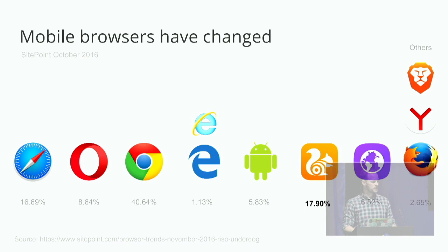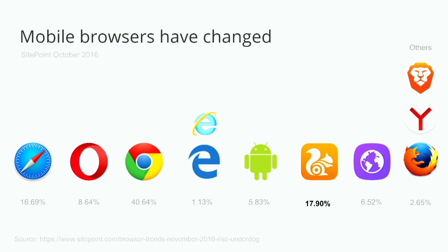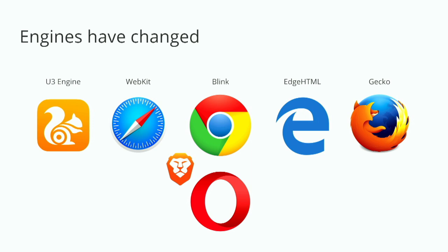Looking at overall mobile market shares, we see browsers more popular than Safari Mobile — almost 18% of the global market share. We're still seeing a significant chunk of Android stock browser. We're seeing new browsers like Samsung Internet growing triple-digit market shares every month because it's now the default browser on Samsung devices. We're basically seeing a whole shift from traditional browsers to new players entering the market — including Brave and Yandex gaining pretty good market shares.